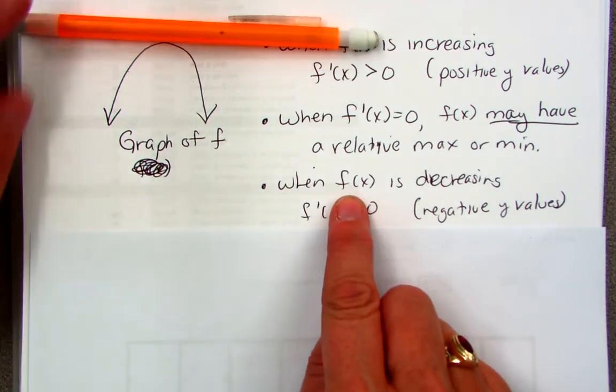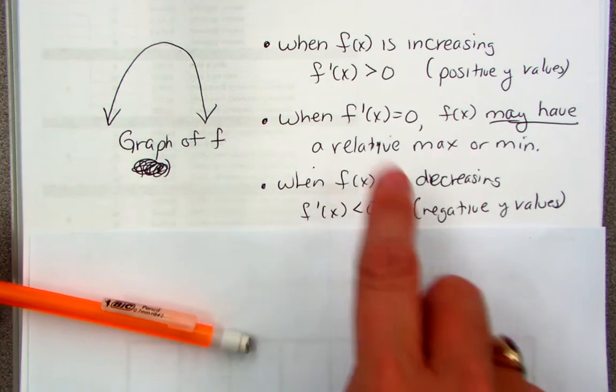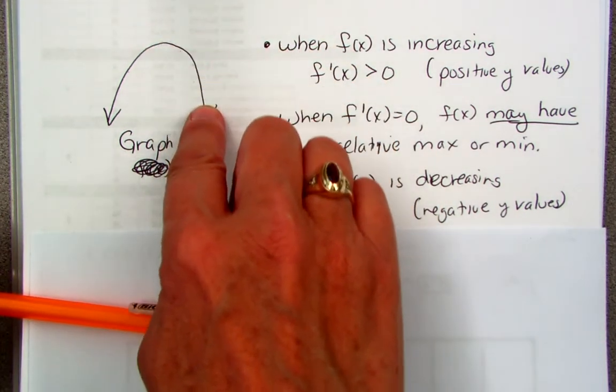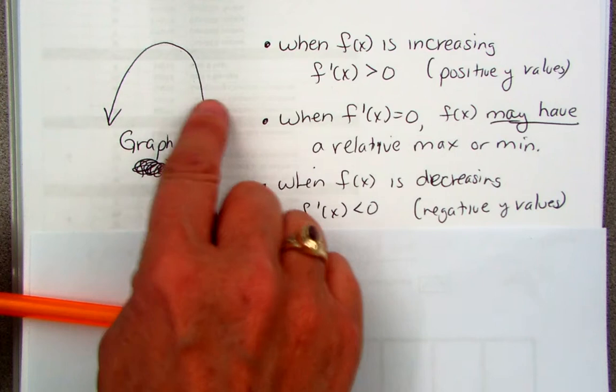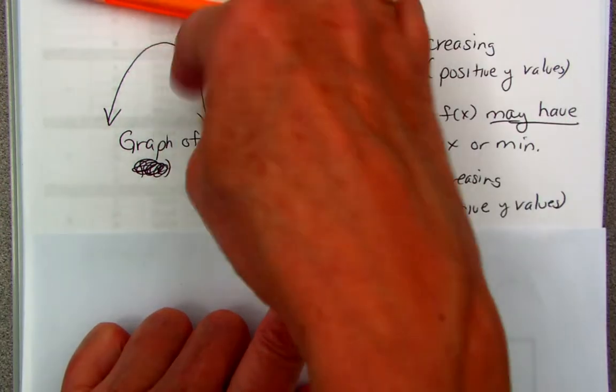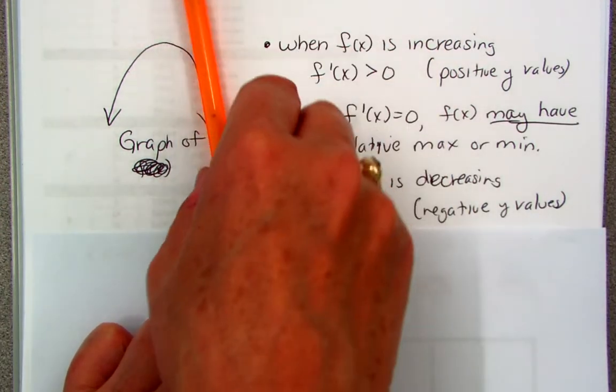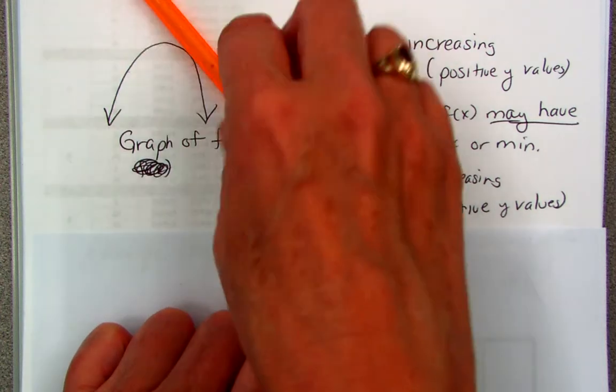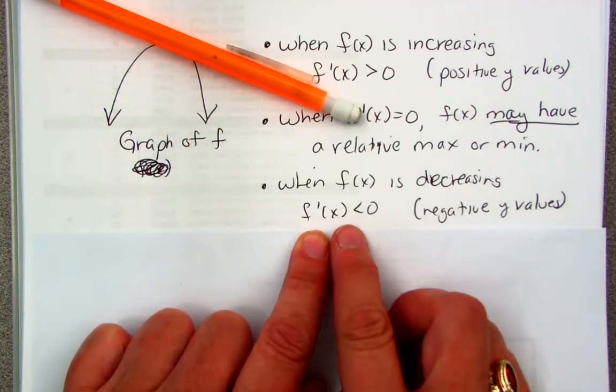Again, here's my y values. When those y values on f are decreasing, so these y values are going down. They're positive y values, and then they're going downward. So the slope of the tangent line, where the y's are decreasing, that's over here, right? Let me just roll it around. That's the slope of the tangent line. What about it? Is negative. Isn't that a negative slope?